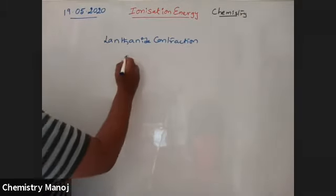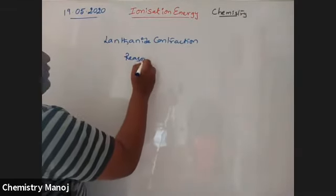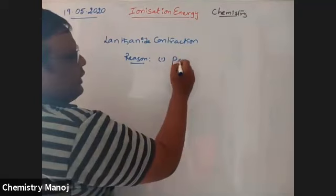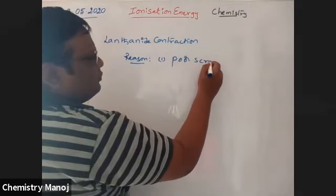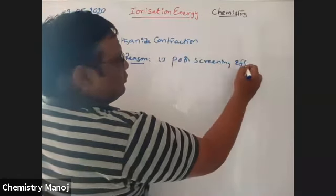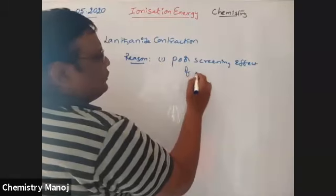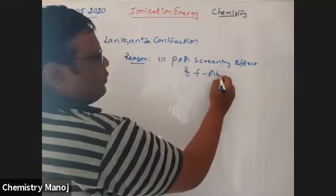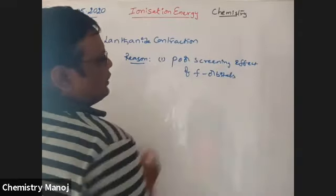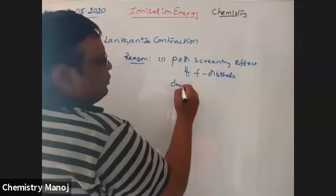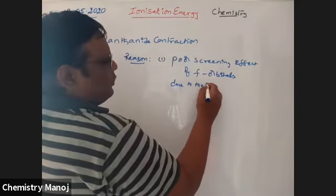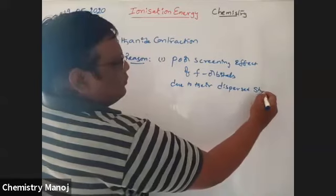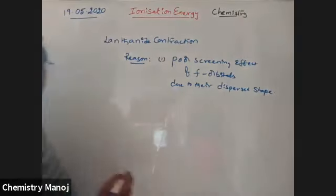The reason behind lanthanide contraction is, first, the poor screening effect of f-orbitals due to their dispersal shape.